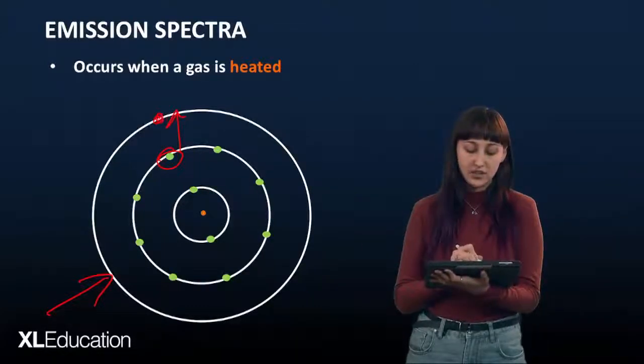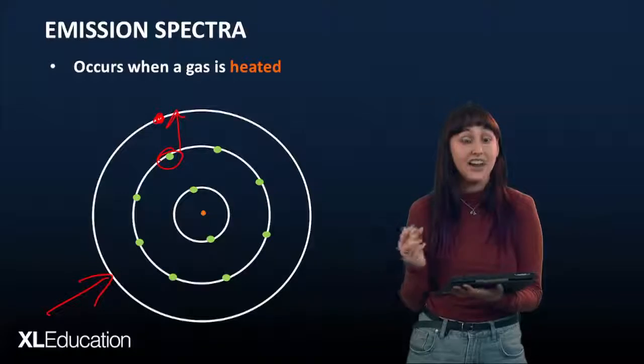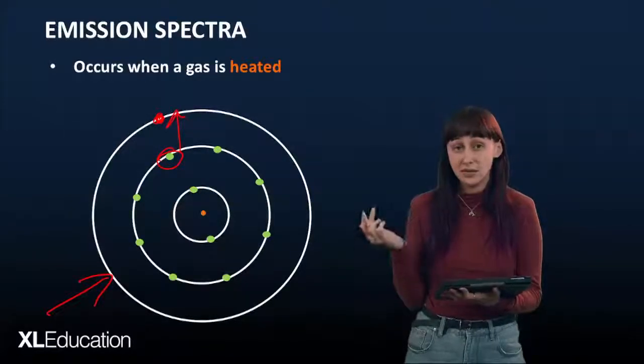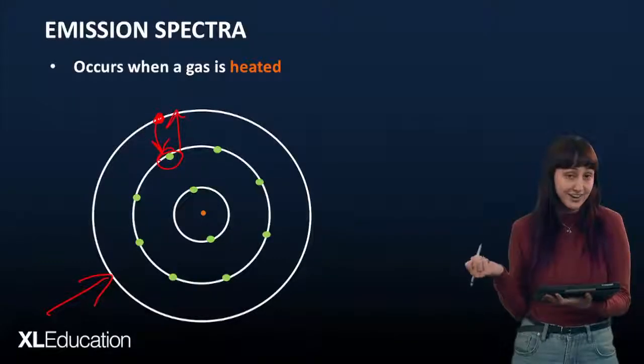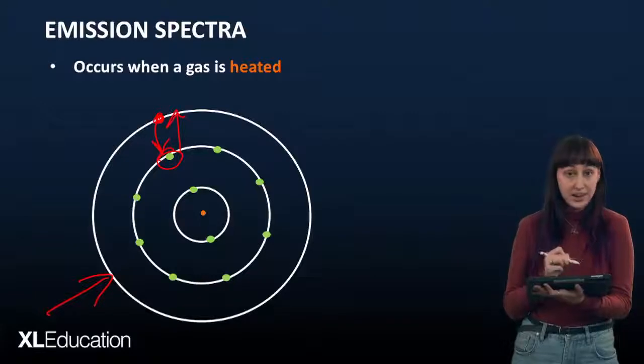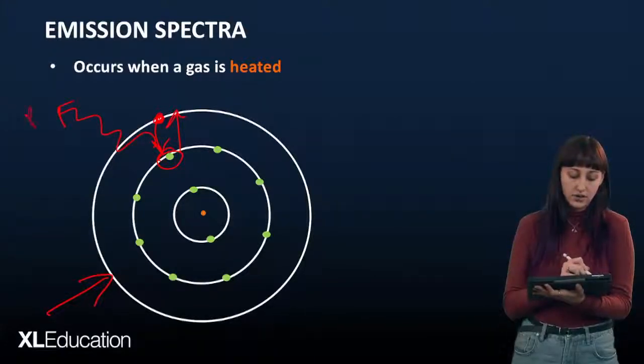And when this electron is in a higher energy level, it is in an excited state, which is very unstable. And so the electron will exist there momentarily, but then drop back down to the lower stable energy level. And this jump back down will give off energy, which is called a photon.